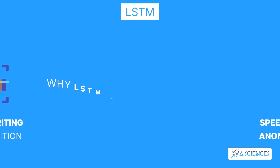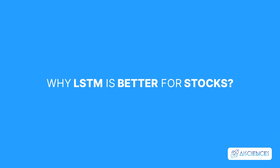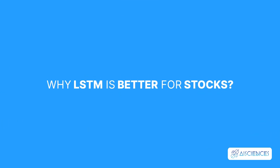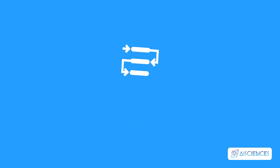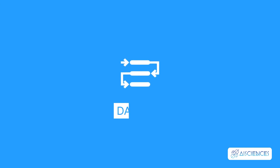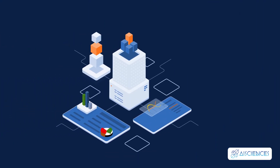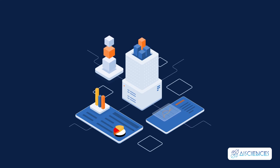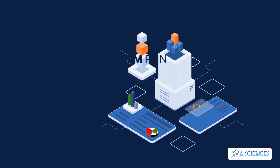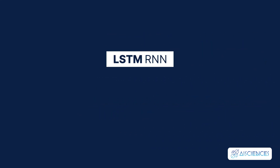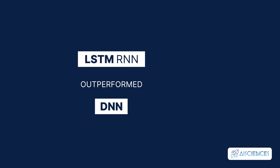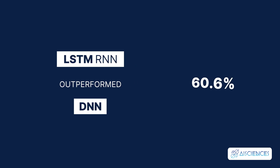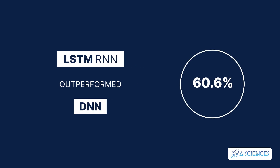You must be wondering why LSTM is better for stocks. LSTM can learn long-term dependencies in the dataset. Therefore, as this type of model is trained on more and more data, it could be possible for this delay to diminish. LSTM RNN outperformed DNN, averaging a 60.6% directional accuracy for weekly predictions.